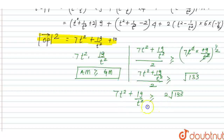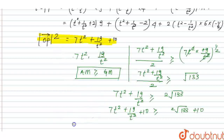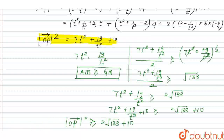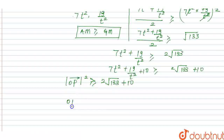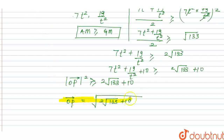Adding 10 to both sides: 7t² + 19/t² + 10 ≥ 2√133 + 10. This expression is the value of |OP|². Therefore, the least value of |OP|² is 2√133 + 10, and the least value of |OP| is √(2√133 + 10).